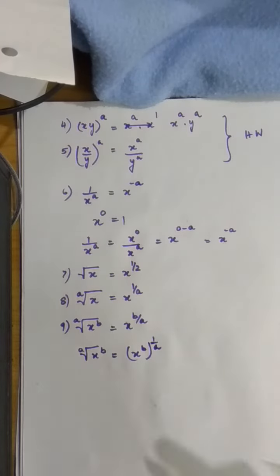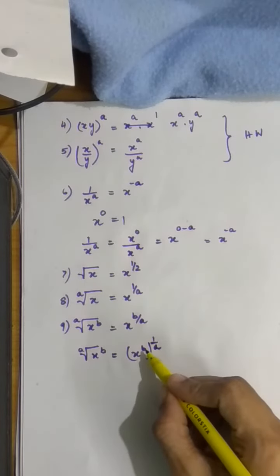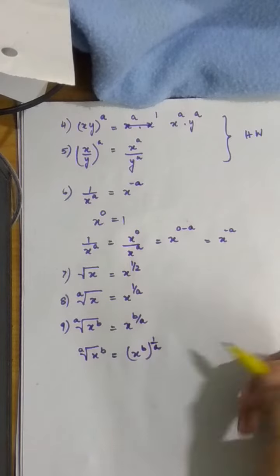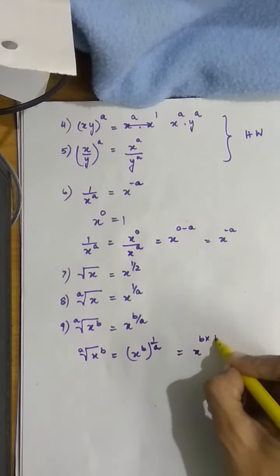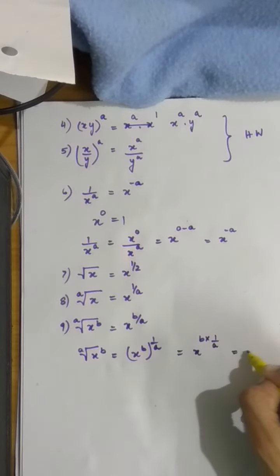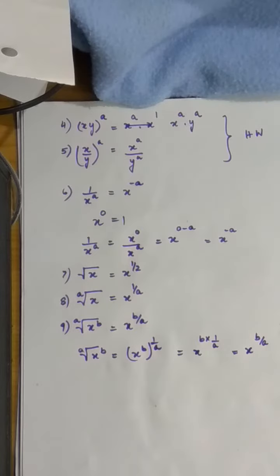I know from my third rule that when x to the power b is whole being raised to 1 by a, I can simplify it and write it as b into 1 by a or x to the power b by a. This often comes as a two marks question.